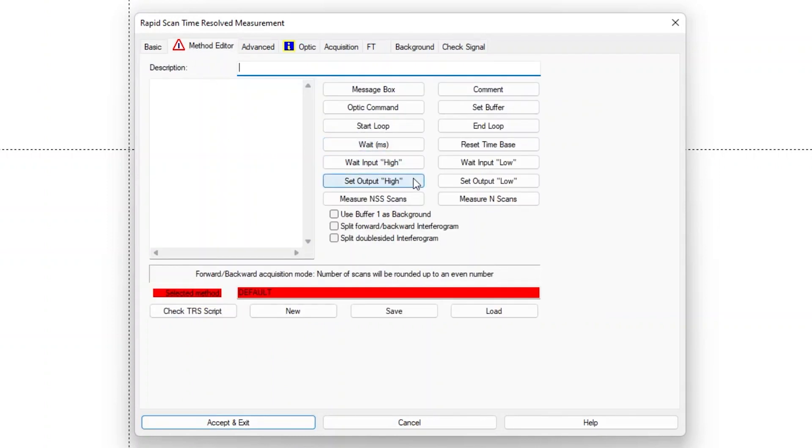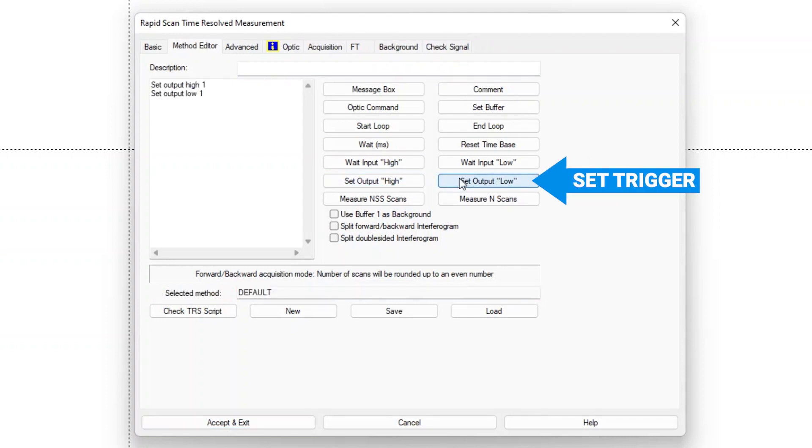The RapidScan function includes a method editor to make the user experience more convenient. For example, it includes flexible and advanced trigger options. The set trigger high and set trigger low commands are used if the spectrometer should be the master and send a trigger to start or stop the measurement or any other event. The wait input low or high commands are used if the external experiment or event should control the spectrometer.